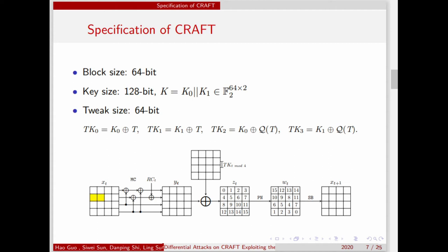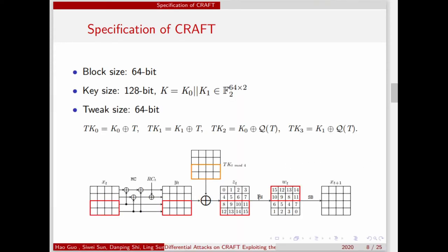For AddTweakey, TK_{t mod 4} is XORed on the state. The tweakey schedule is: TK0 = K0 XOR T, where T is the tweak; TK1 = K1 XOR T; TK2 = K0 XOR Q(T), where Q is permute-neighbors on T; and TK3 = K1 XOR Q(T). We can see that the tweakey schedule is very simple. PN is permute-neighbors, and the last two rows of the state are transformed into the first two rows, and the first two rows are transformed into the last two rows. It is another critical property of our attack.